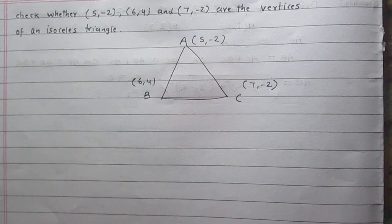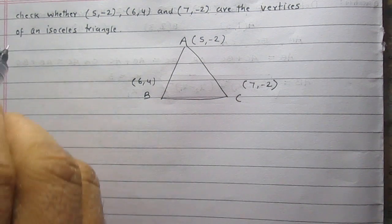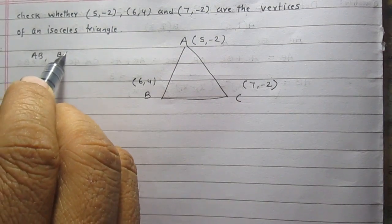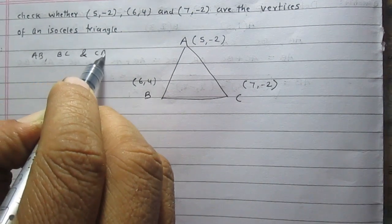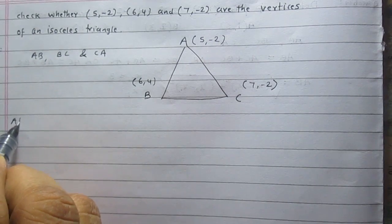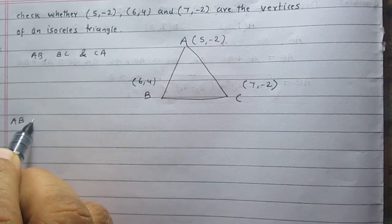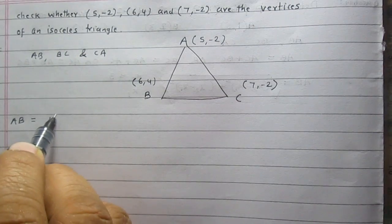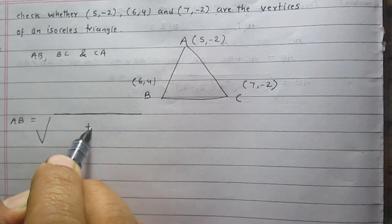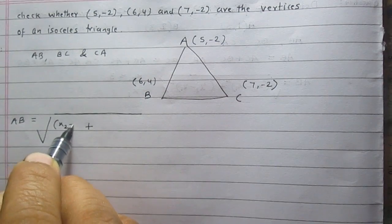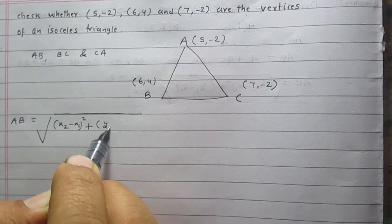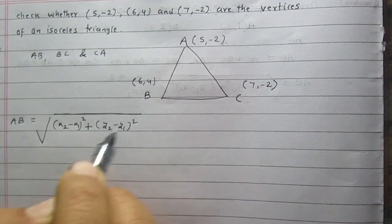In order to find this, we will first calculate the distances AB, BC, and CA using the distance formula, which is equal to the square root of (x2 - x1)² + (y2 - y1)².